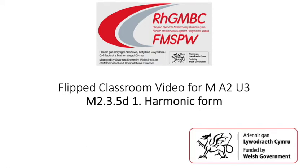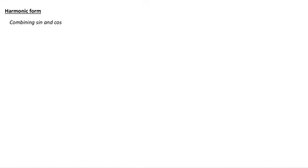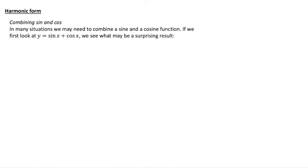Flipped Classroom video for Maths A2 unit 3, Harmonic Form. Harmonic Form is about combining sine and cos. In many situations we may need to combine a sine and a cos function, and we'll have a look at y equals sine x plus cos x to see what might be a surprising result.